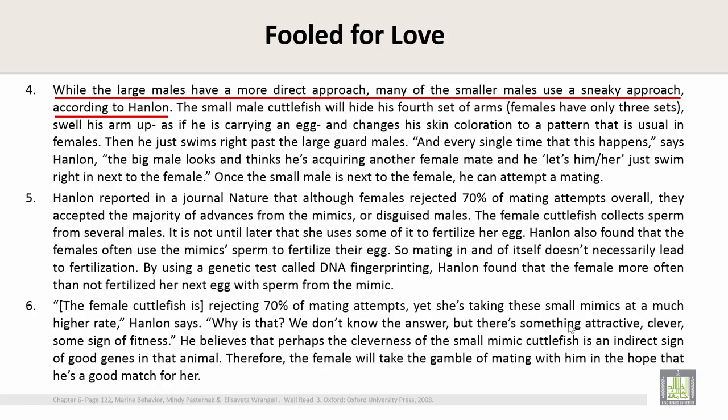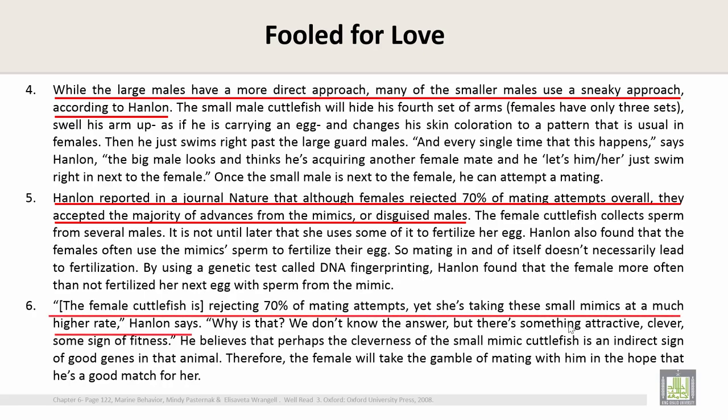The first sentence in paragraph 5 is: 'Hanlon reported in the journal Nature that although females rejected 70% of mating attempts overall, they accepted the majority of advances from the mimics, or disguise males.' The first sentence in paragraph 6 is: 'The female cuttlefish is rejecting 70% of mating attempts, yet she is taking these small mimics at a much higher rate.' Now read the last sentence of this text.